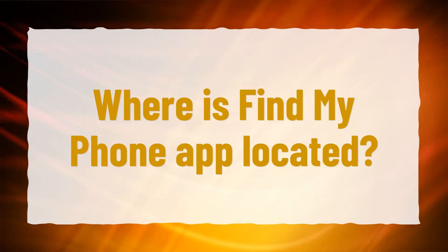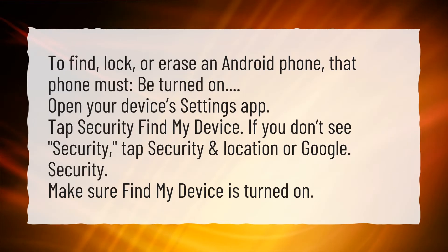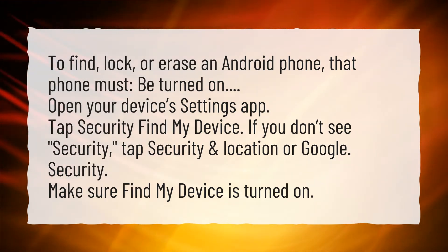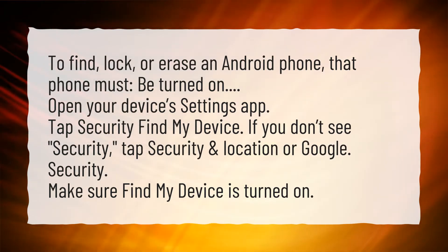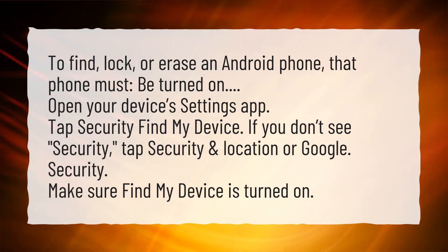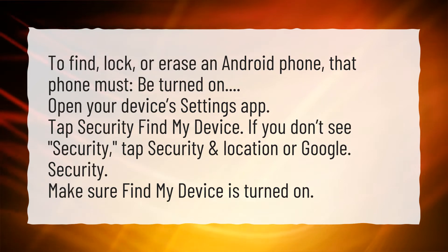Where is Find My Phone app located? To find, lock, or erase an Android phone, that phone must be turned on. Open your device's Settings app. Tap Security, then Find My Device. If you don't see Security, tap Security and Location or Google Security. Make sure Find My Device is turned on.